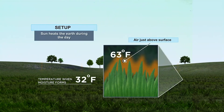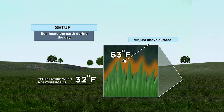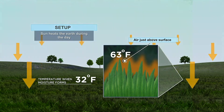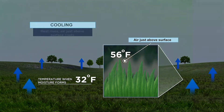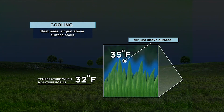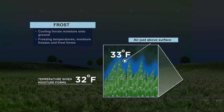Now let's look at a colder scenario that leads to the formation of frost. It all starts off the very same way — the sun heats the surface, and the air just above the ground gets to about 63 degrees. But the dew point is much lower, around the freezing point. This time, when the air cools to the dew point, tiny ice crystals form. And that's how you get your frost.